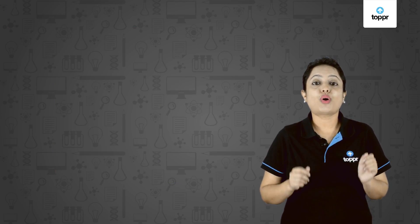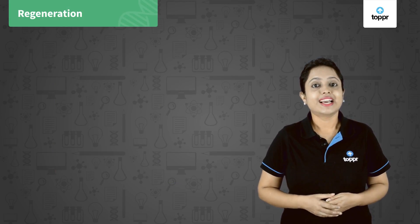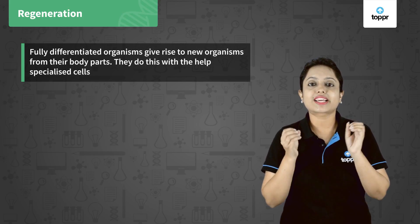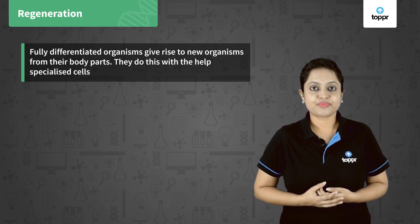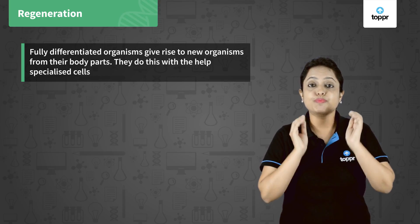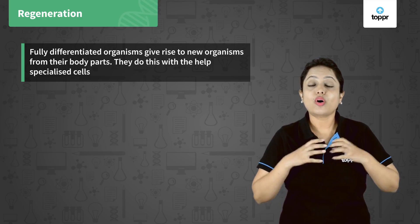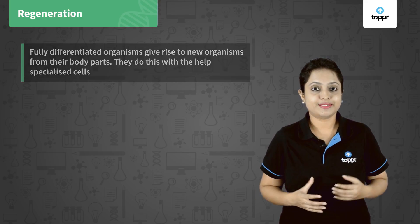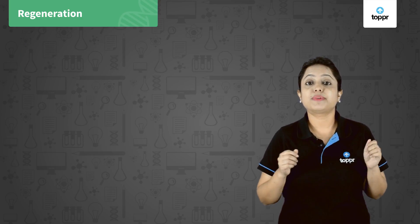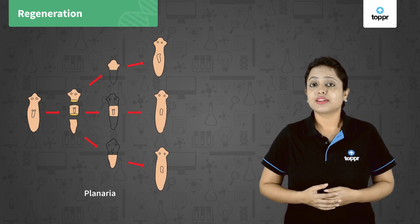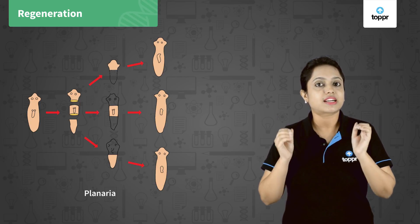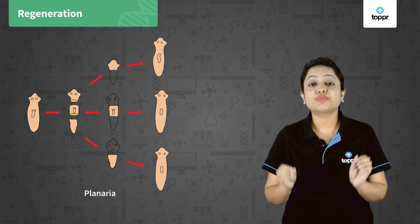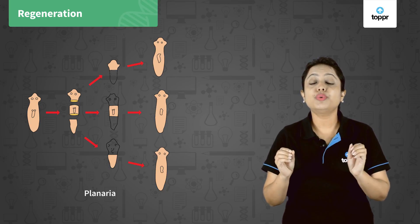Next, we'll see what is regeneration. In this process, fully differentiated organisms give rise to new organisms from their body parts. They do this with the help of specialized cells which can make all types of cells in the body. Hydra and planaria show regeneration. If the body of planaria is cut into many pieces, then each piece will grow into a new individual.